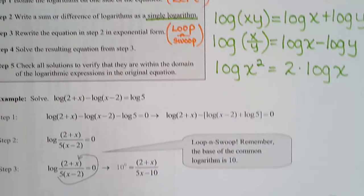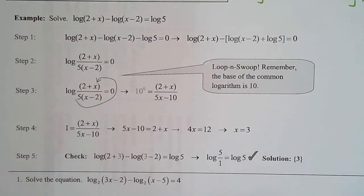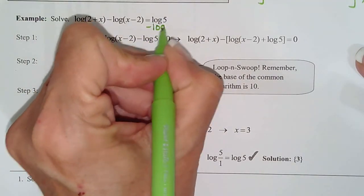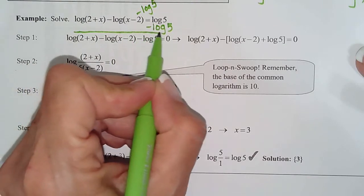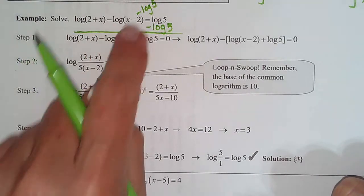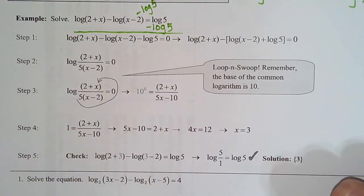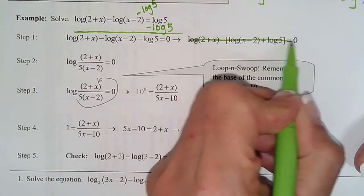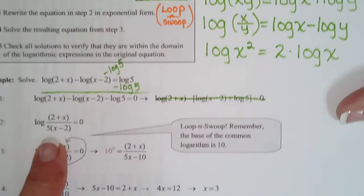Let's see these steps in motion. Step 1: get all your logs on the left. That means I need to subtract log of 5 from both sides. So on the right side I now have 0. I'm going to have log of (2 plus x) minus log of (x minus 2) minus log of 5 equals 0. Step 1 is done — all my logs are on the left. Now our properties come into play.